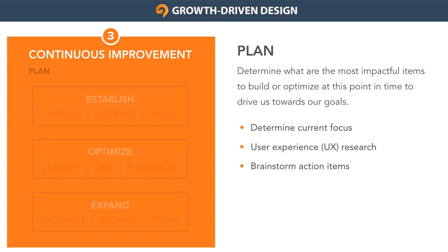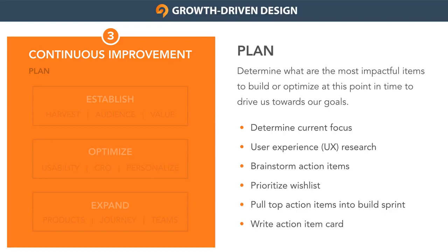Once you've determined your focus area, it's time to complete UX research to understand what challenges or friction points on the website users are running into. Once you have a good understanding of those challenges, your team will brainstorm all sorts of new action items to build that drive user value while improving the performance metric of the current focus area. All ideas should relate to the team's current focus area. With your list of ideas, it's now time to prioritize that list to identify the highest-impact action items you can implement right now. Then consider your workload and capacity, selecting the highest-impact action items until you run out of capacity. Anything remaining will be considered the next time you do your planning in the next cycle.